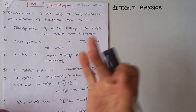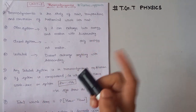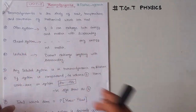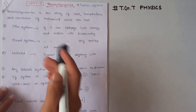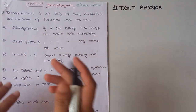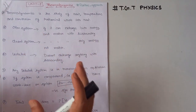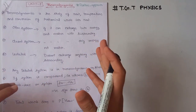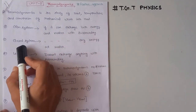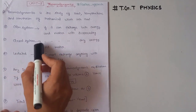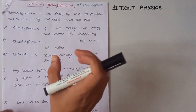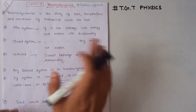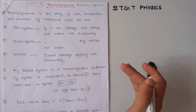In thermodynamics there are three systems. Our first system is open system, closed system, and isolated system. A system which can exchange both energy and matter with the surrounding is called an open system. In a closed system, only heat can be exchanged with the surrounding; matter does not exchange with the surrounding.